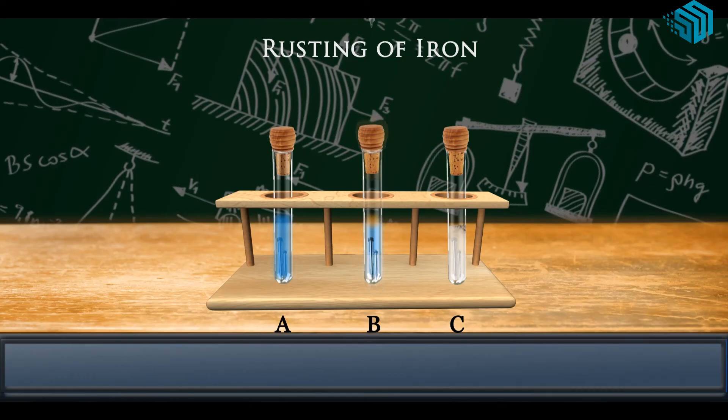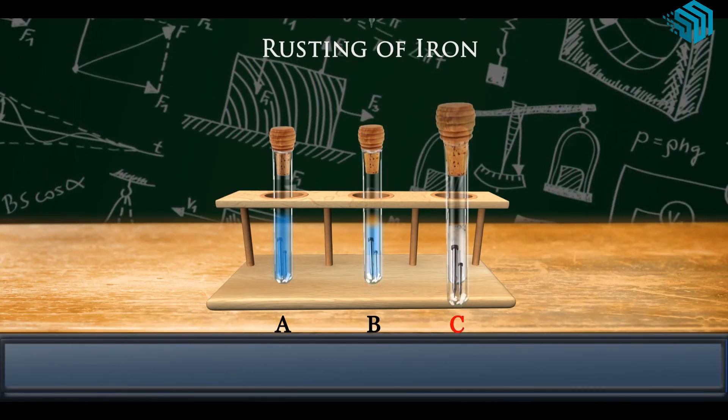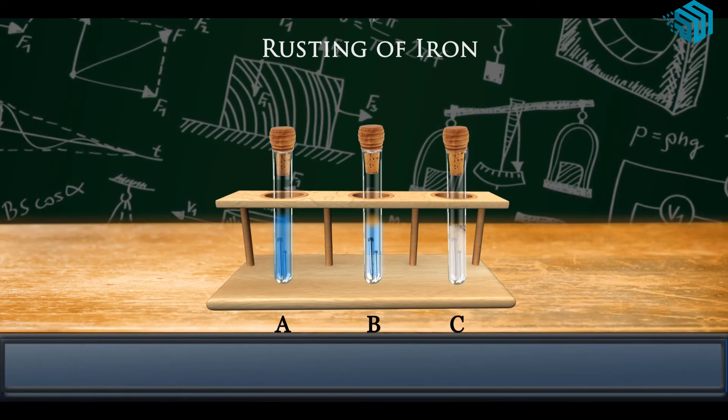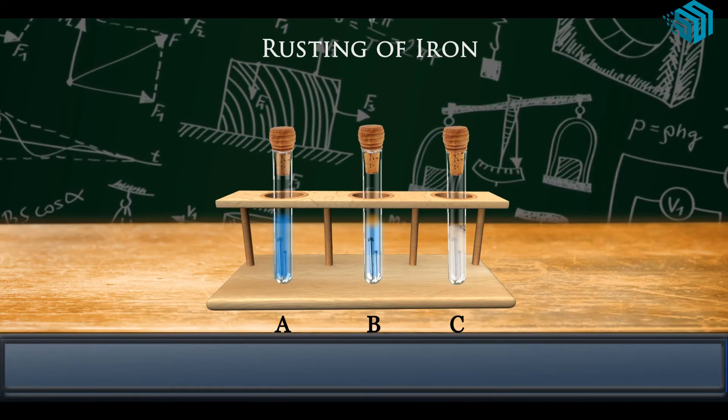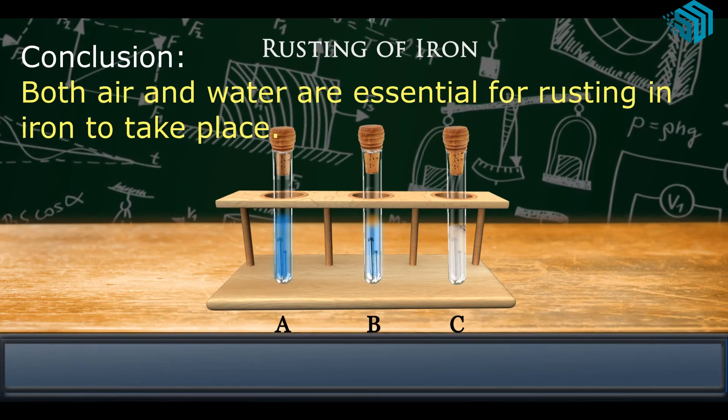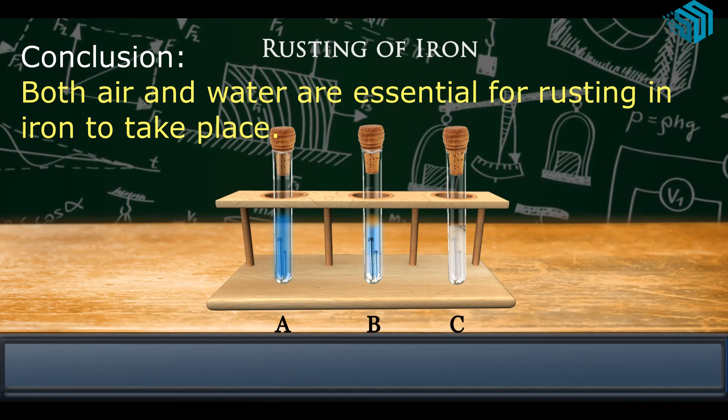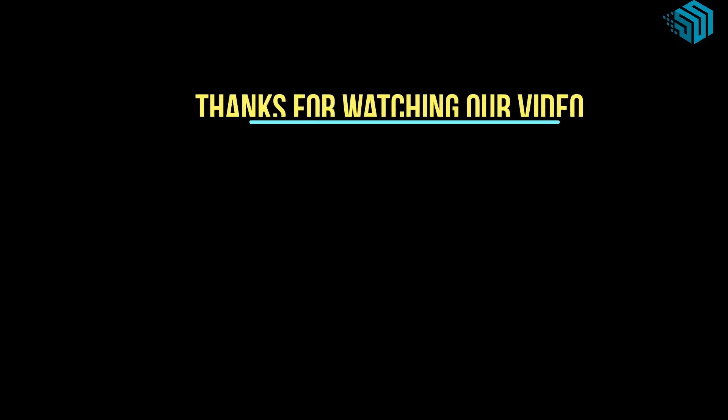Nails in test tube C do not get rusted because nails are only exposed to dry air, and anhydrous calcium chloride absorbs the moisture present in the test tube. We conclude that both air and water are essential for rusting in iron to take place.